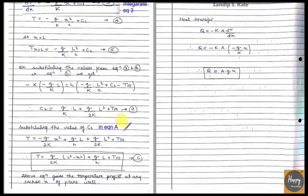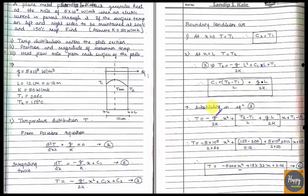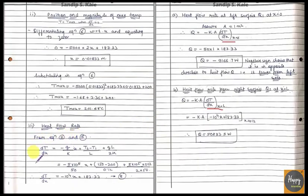Differentiating equation 5 gives: dT/dx = −(g/k)·x + [(T2 − T1)/L + (g/2k)·L]. Substituting the known values of g, k, T1, T2, and L, we get an expression for dT/dx in terms of x, which is equation 8.